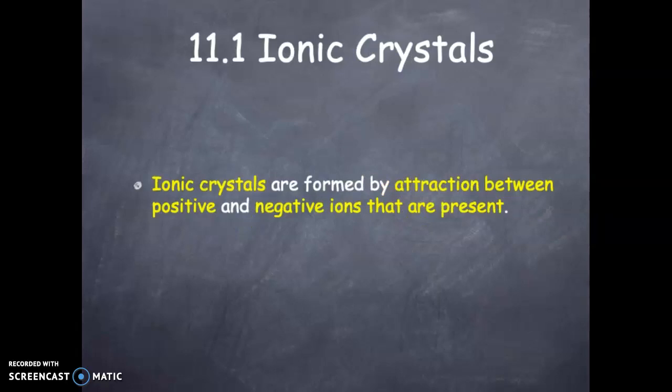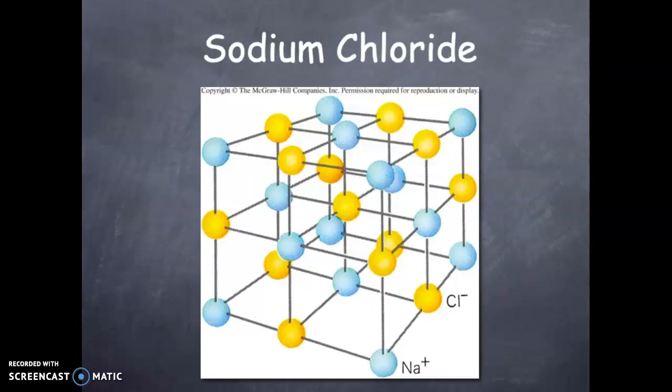Ionic crystals are formed by attraction between positive and negative ions that are present in the material. An example is sodium chloride. When sodium bonds chemically with chlorine, we get sodium ions and chloride ions in a regular pattern. That is the way nature makes sodium chloride.